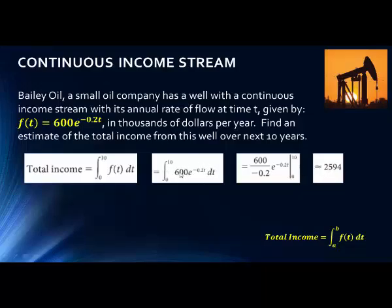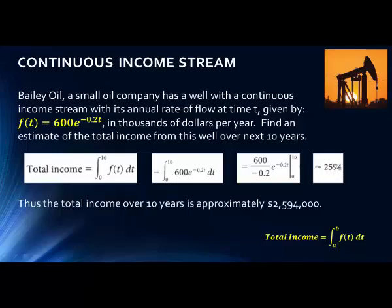Make sure you can solve this integral using substitution. Also notice this answer is wrong if you report just 2,594 — because the function is expressed in thousands of dollars per year. So the total income from this well over the next 10 years is $2,594,000. Make sure you are paying attention to units in problems and express the answer properly.